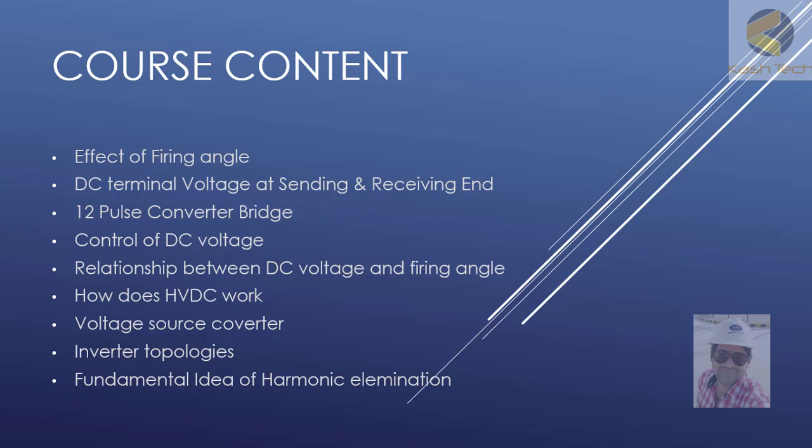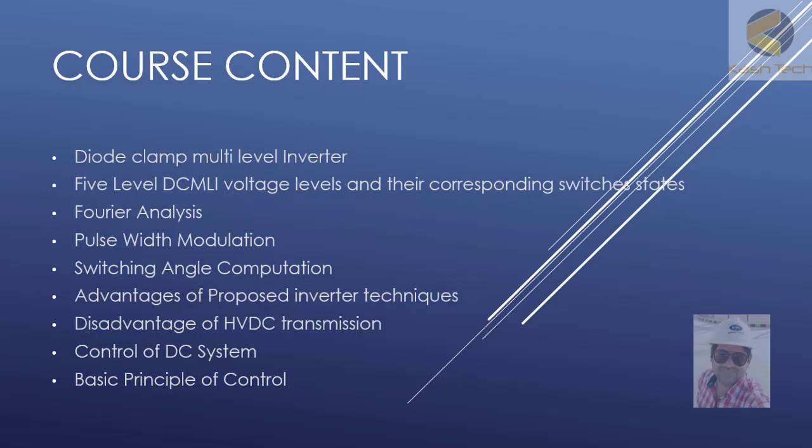We will discuss the effect of firing angle, DC terminal voltage at sending and receiving ends, 12-pulse converter bridges, control of DC voltage, and the relationship between DC voltage and firing angle. We will also explain how HVDC works, voltage source converters, inverter topologies, fundamental ideas of harmonic elimination, diode clamp multilevel inverter, five-level DC MLI voltage levels and their corresponding switch states, Fourier analysis, pulse width modulation, and switching angle computation.